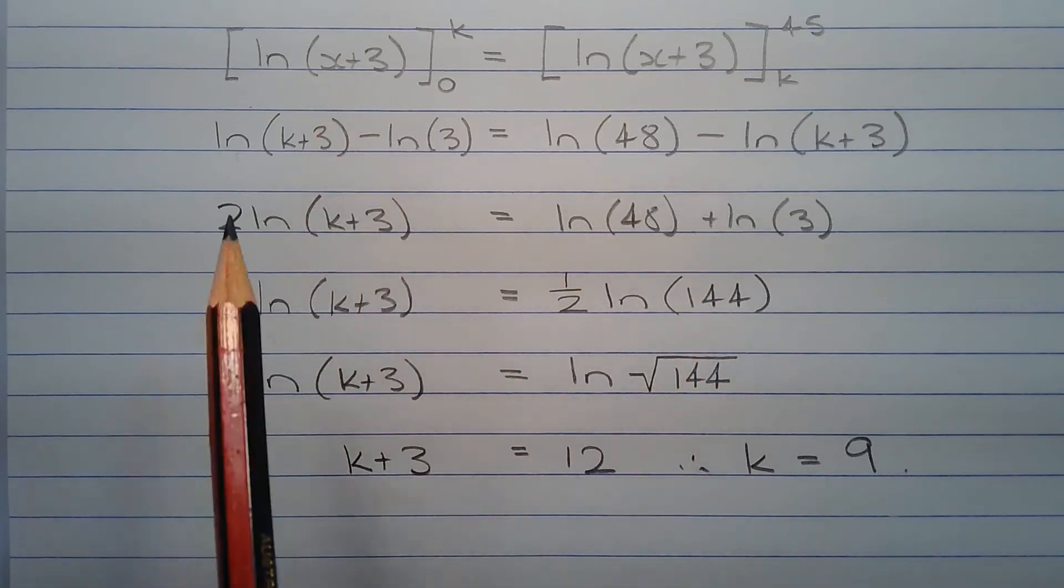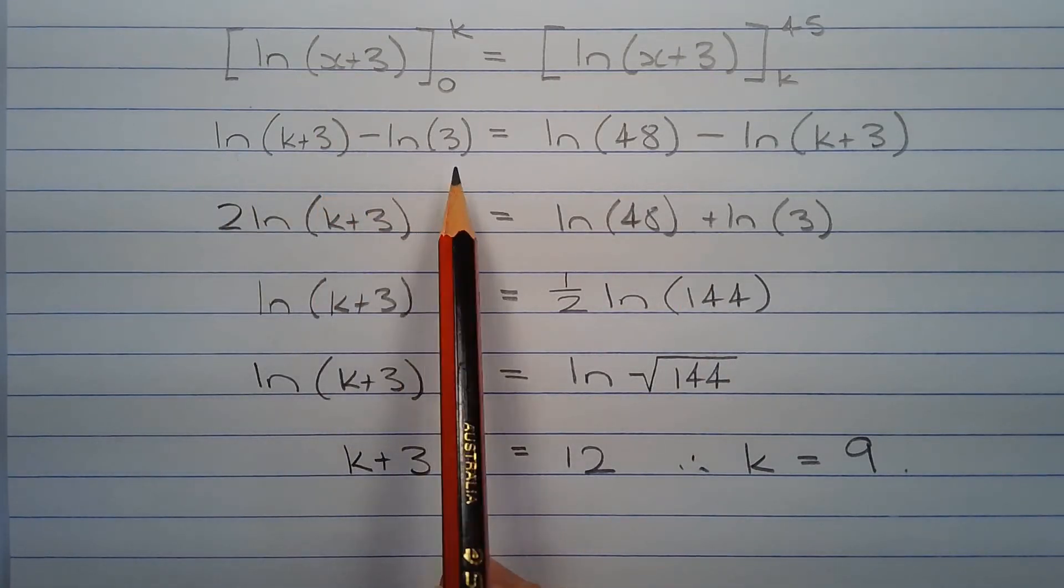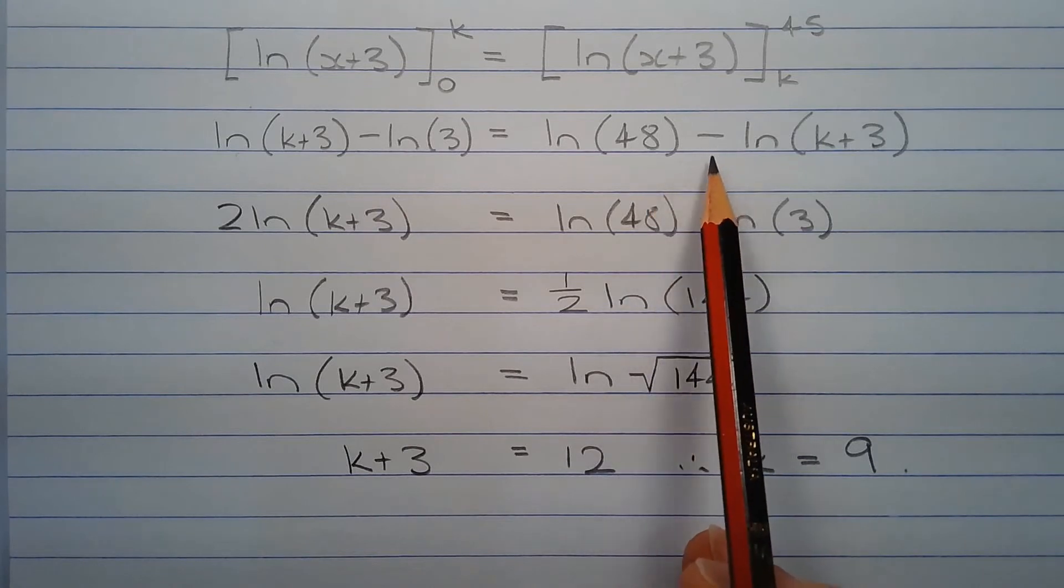Applying the limits of integration we have ln of k plus 3 minus ln of 3 is equal to ln of 48 minus ln of k plus 3.